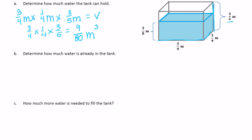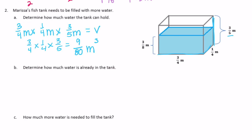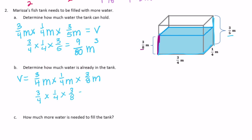Determine how much water is already in the tank — the blue part. The length is still 3/4 meters, the width is still 1/4 meter, but this time the height of just the water is 3/8 meters. 3/4 times 1/4 times 3/8 is 9 over 128 meters cubed — that's the volume of the water.